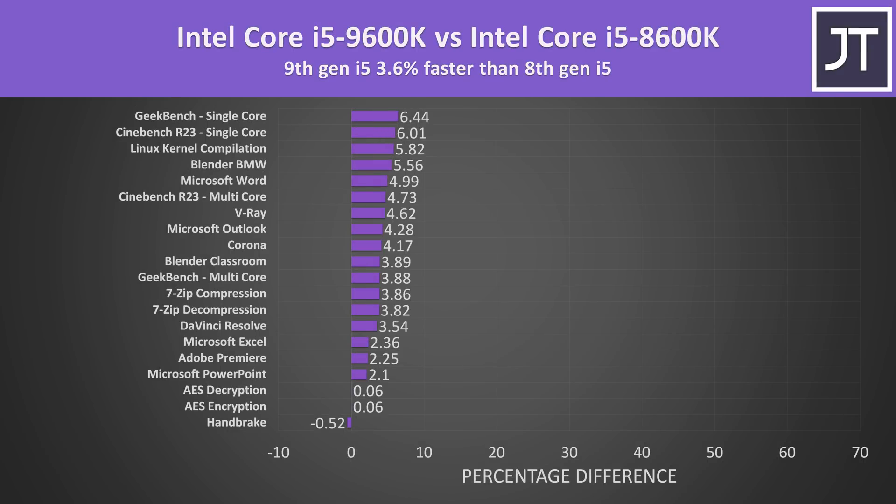Comparing 9th gen to 8th gen across all these applications, only Handbrake was slightly ahead on the 8600K, though within margin of error. On average the 9th gen i5 was just 3.6% faster than 8th gen across these specific workloads. These tests include a number of random single and multithreaded tests, so this average only applies to this selection.